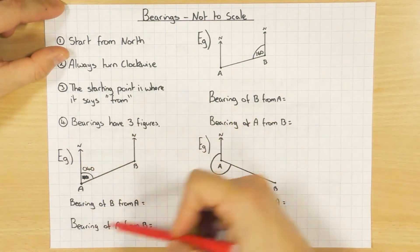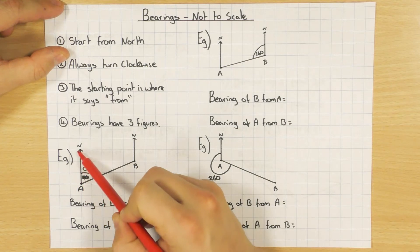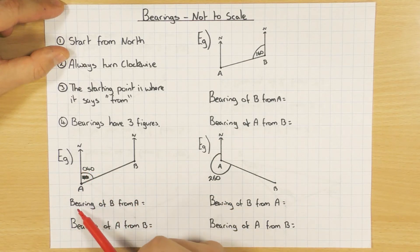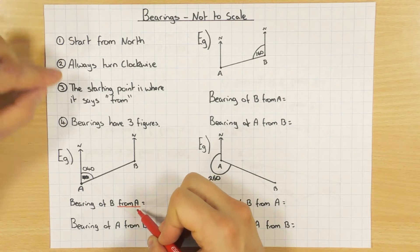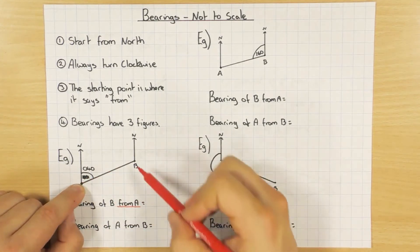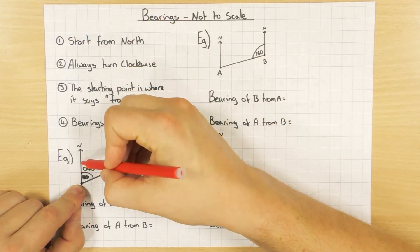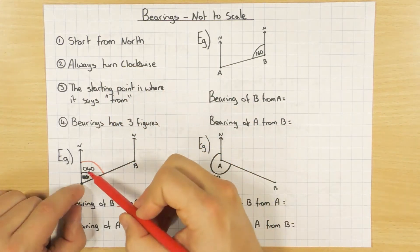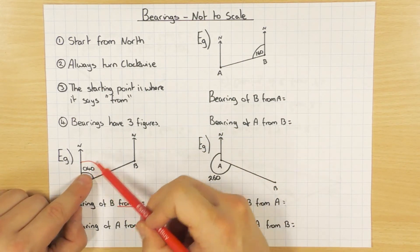Let's look at the first example. I've got point A and point B with north lines drawn, and I've been given a bearing of 040 degrees. The first question asks for the bearing of B from A. I underline 'from A' because of rule three — I'm starting at A, going to B. Starting from north, going clockwise, that angle is already given to us: it's 040 degrees, three figures.